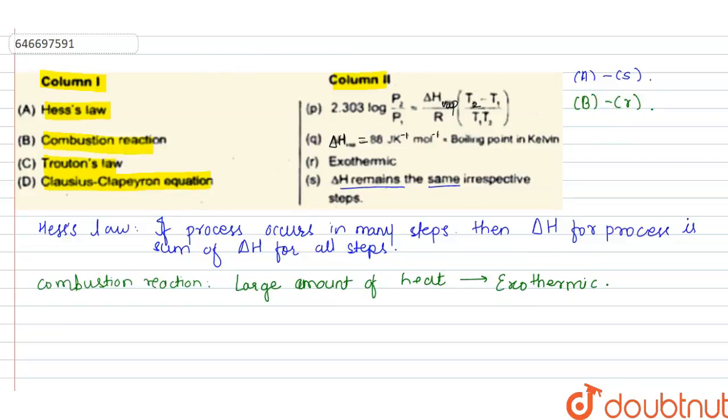Then the next is Trouton's law. This law states that the entropy of vaporization is almost the same value, which ranges between 85 to 88 Joule per Kelvin per mole for all liquids at their boiling point. Therefore C matches with Q.